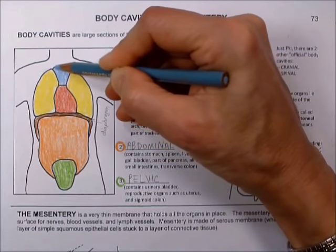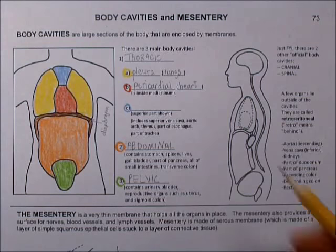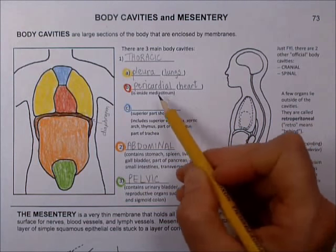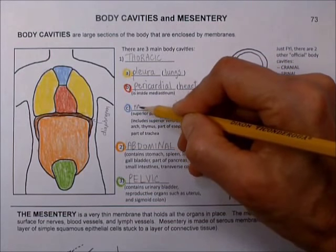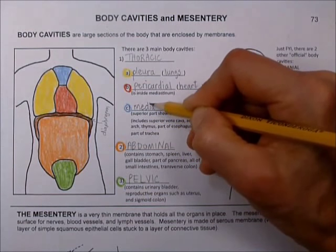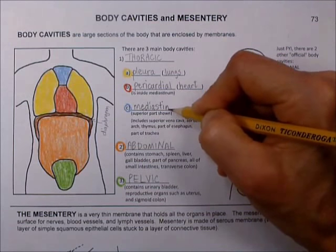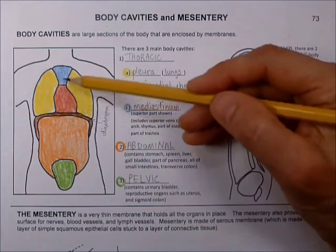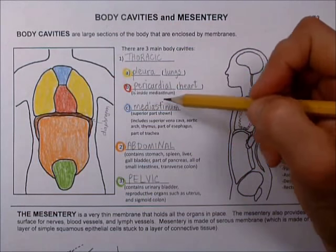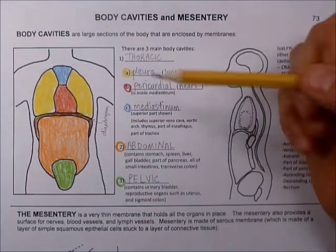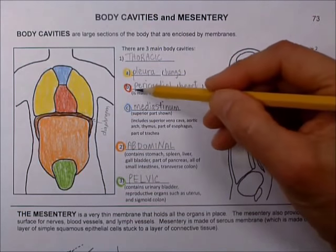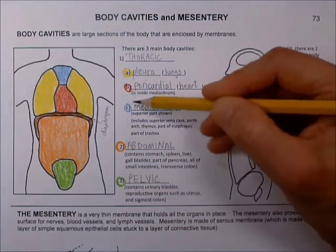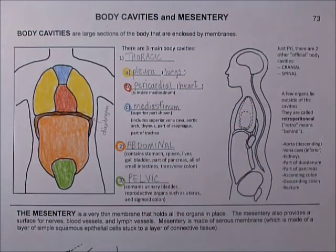This last part is the only one with a really complicated name — the mediastinum. The word means 'middle,' and the 'sternum' part probably refers to the sternum, which is a bone that runs right here, so it's the cavity that's kind of behind the sternum bone area. As I've noted here, the pericardial cavity is actually inside of this mediastinum cavity — so we have the pericardial inside the mediastinum, inside the thoracic cavity.